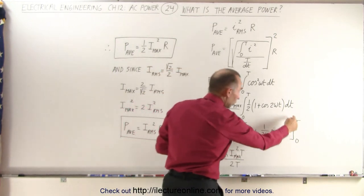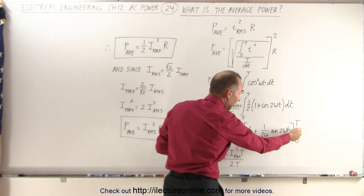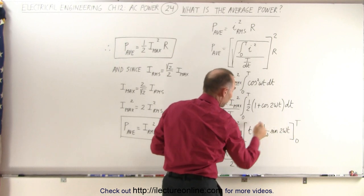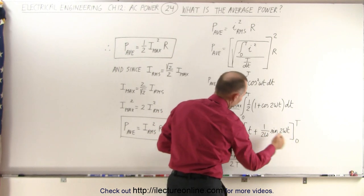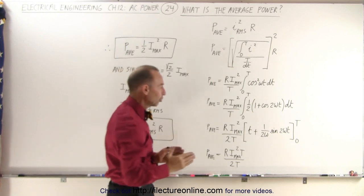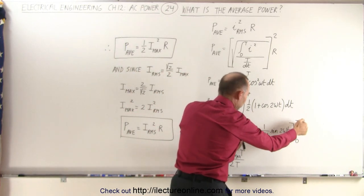Now, it turns out when we plug in the upper and lower limits for the sine of 2 omega T, we get zero. We plug in the upper limit here, we get the period. Plug in the lower limit, we get zero again. So the only surviving term of all this is simply the period.